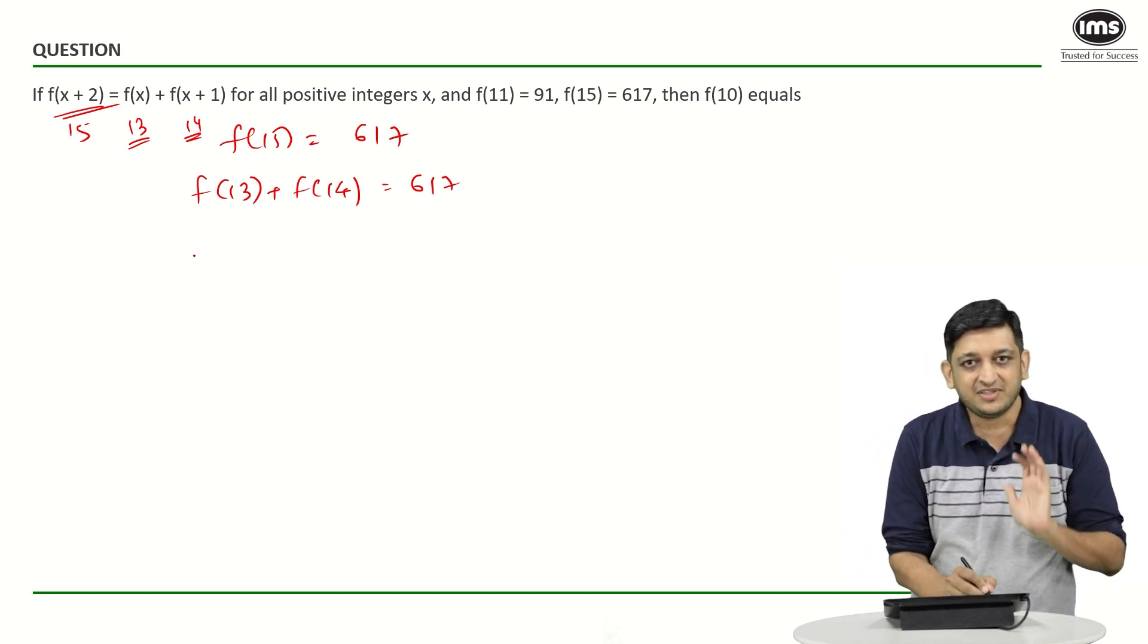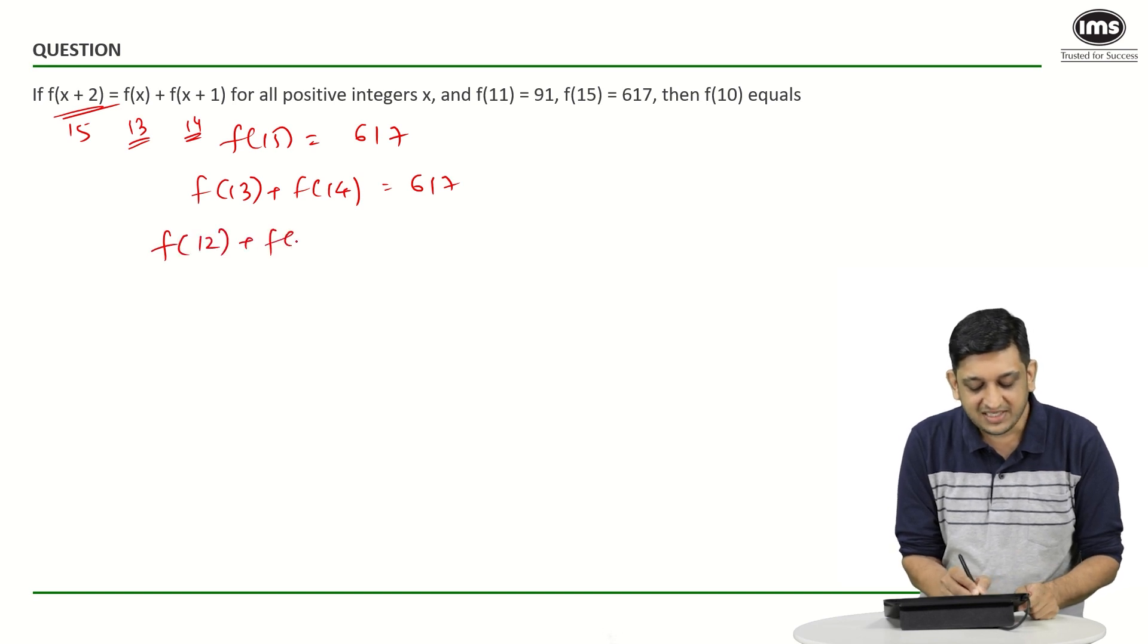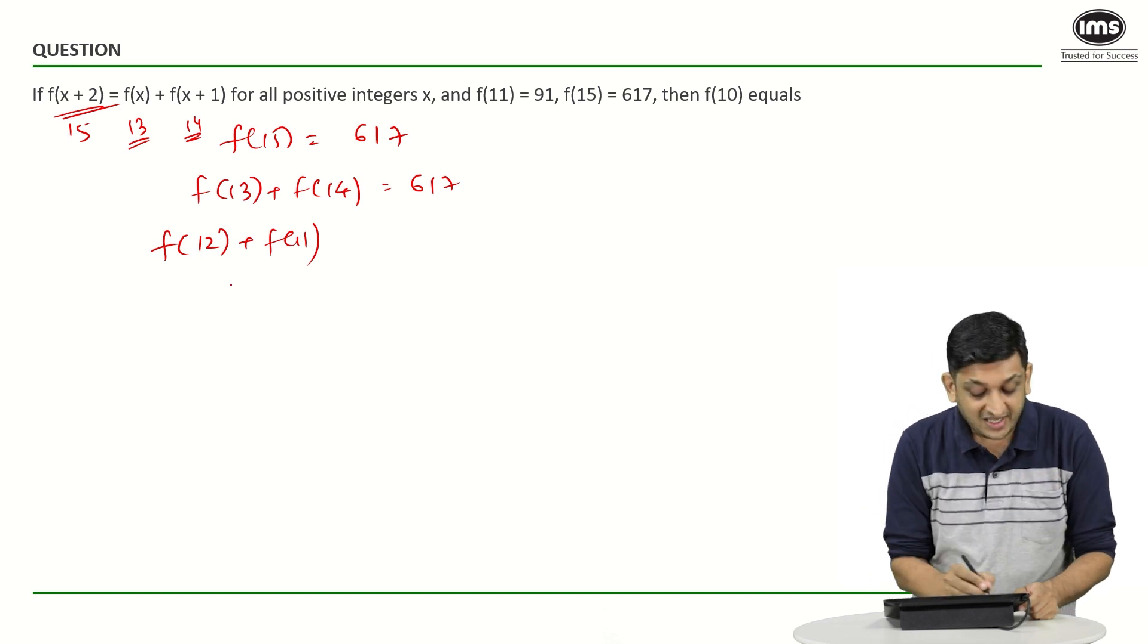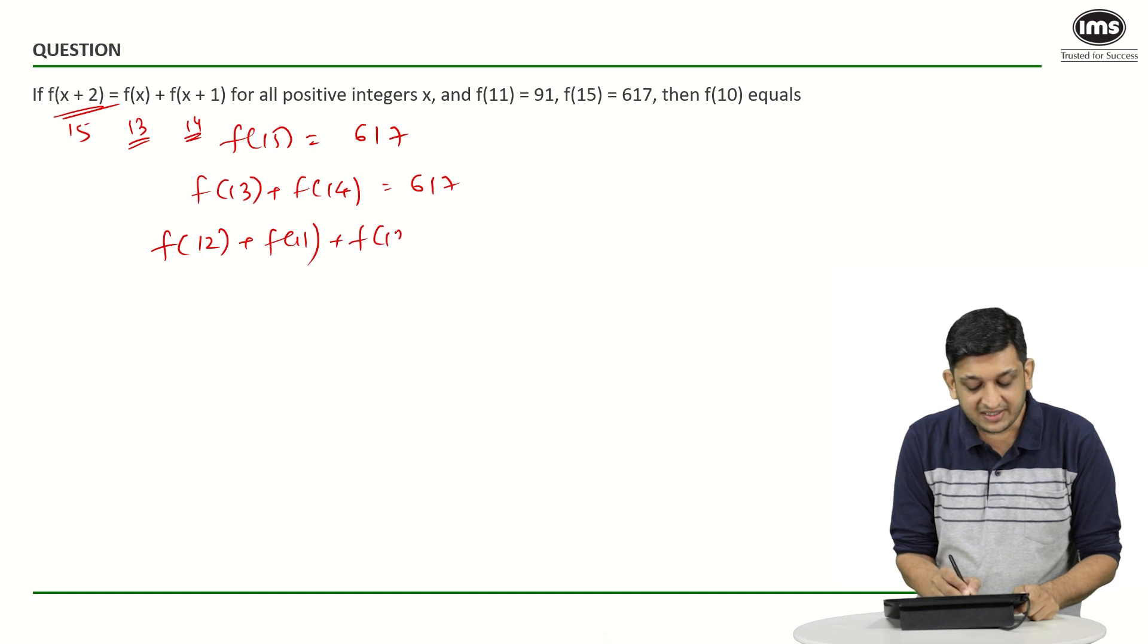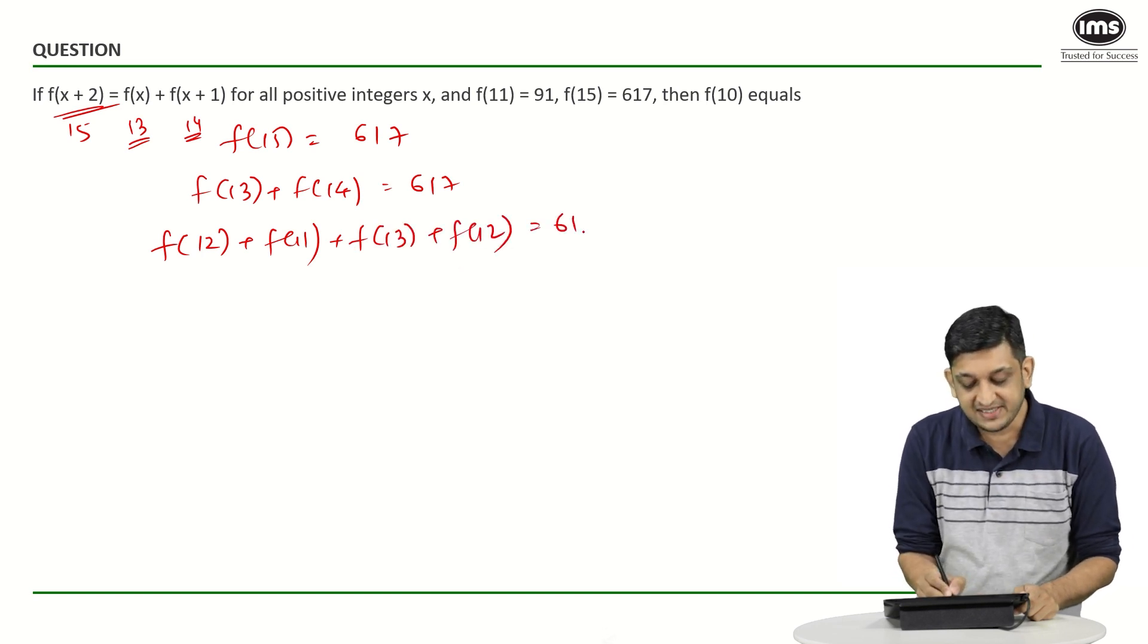In this case, instead of f(13), what I will do is I will write this as f(12) + f(11). Each term is the summation of the two previous terms. So f(12) + f(11) will be f(13). f(14) will be nothing but f(13) + f(12). The sum should be 617.